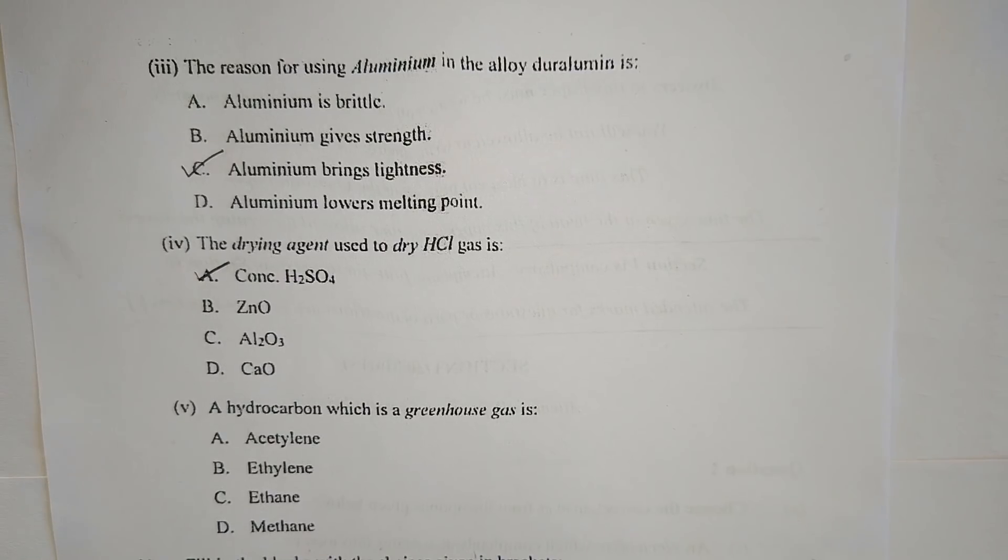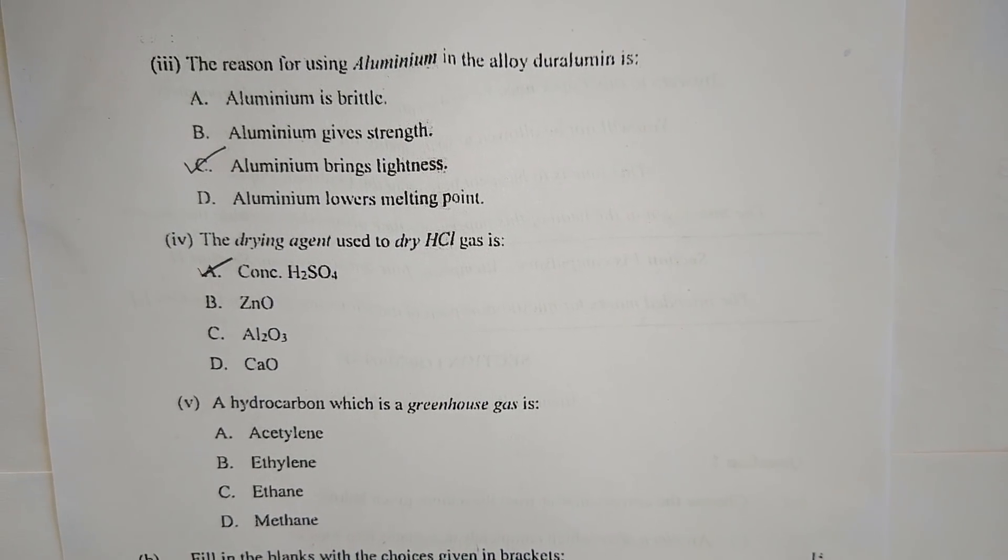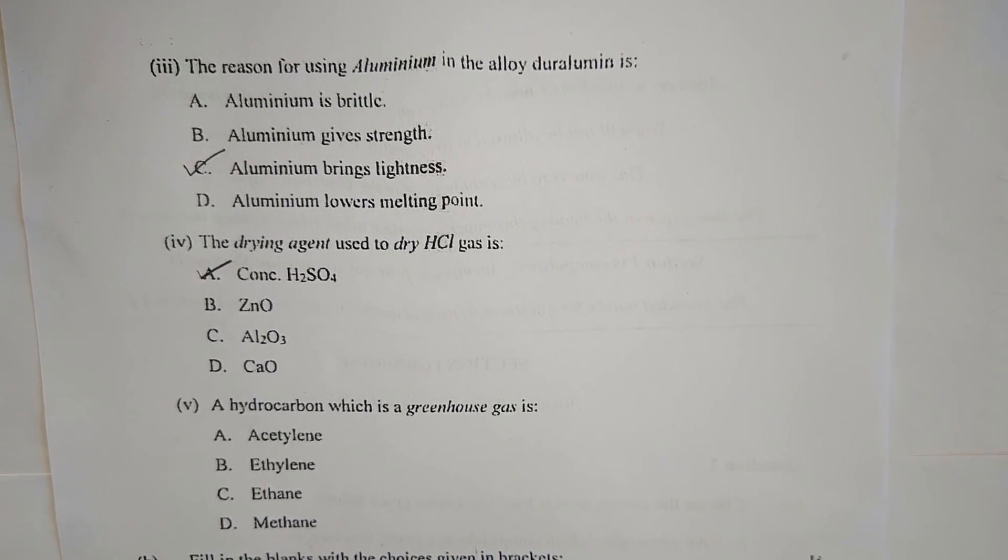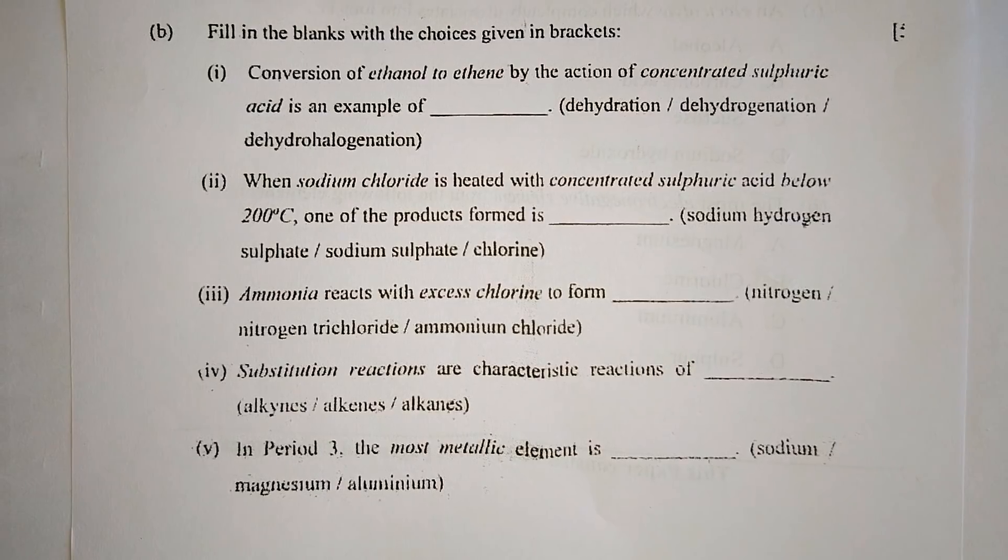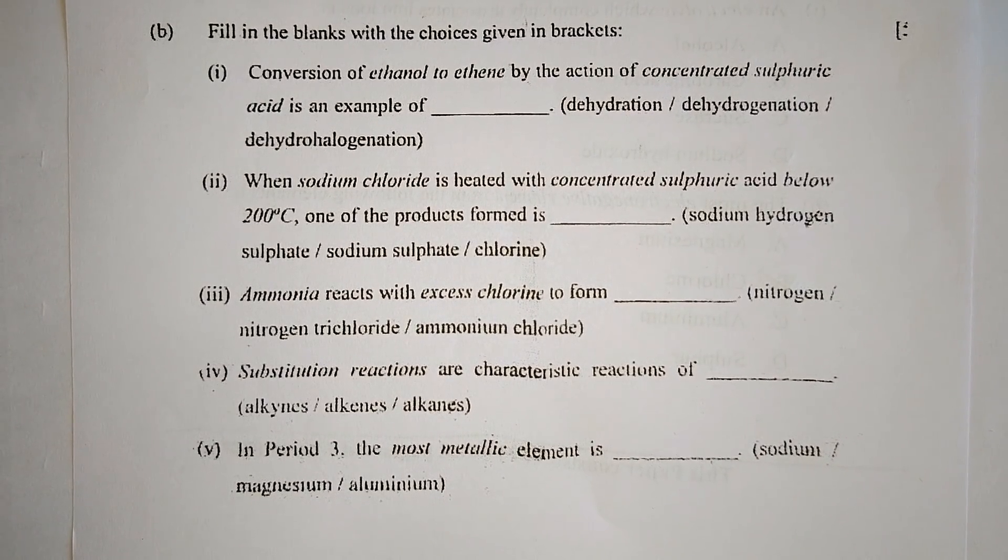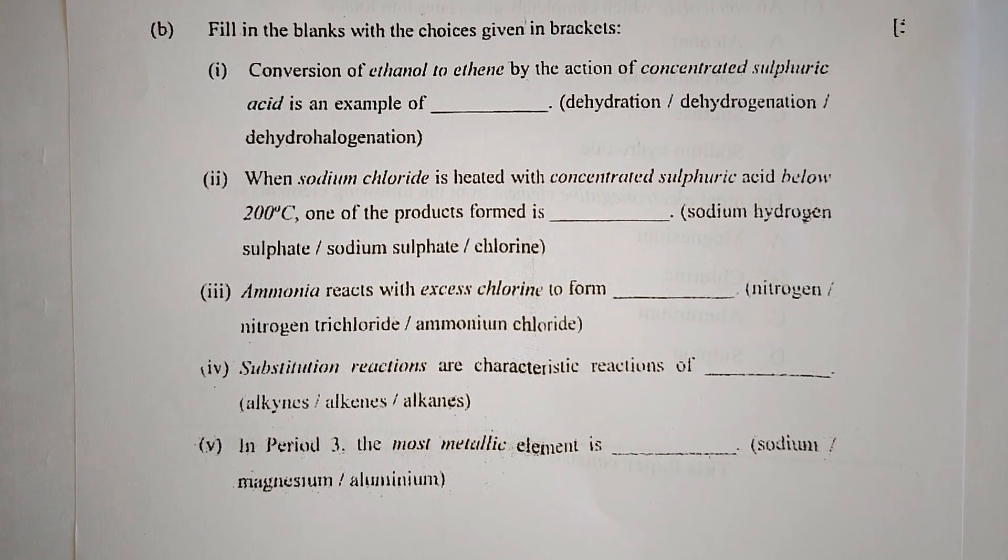Number five: A hydrocarbon which is a greenhouse gas is A. acetylene, B. ethylene, C. ethane, or D. methane. Now we all know it's D. methane.